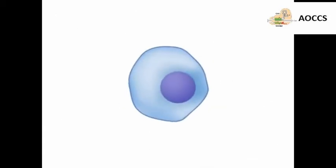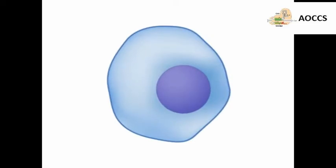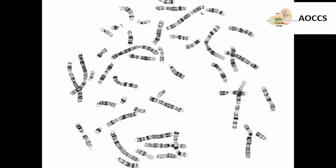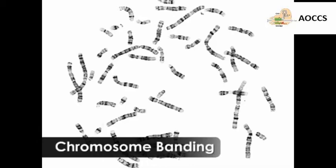Karyotyping is usually performed on cells that are preparing to divide, when their chromosomes are condensed and can be easily distinguished. Chromosomes in a karyotype can be treated with stains that reveal distinctive banding patterns.